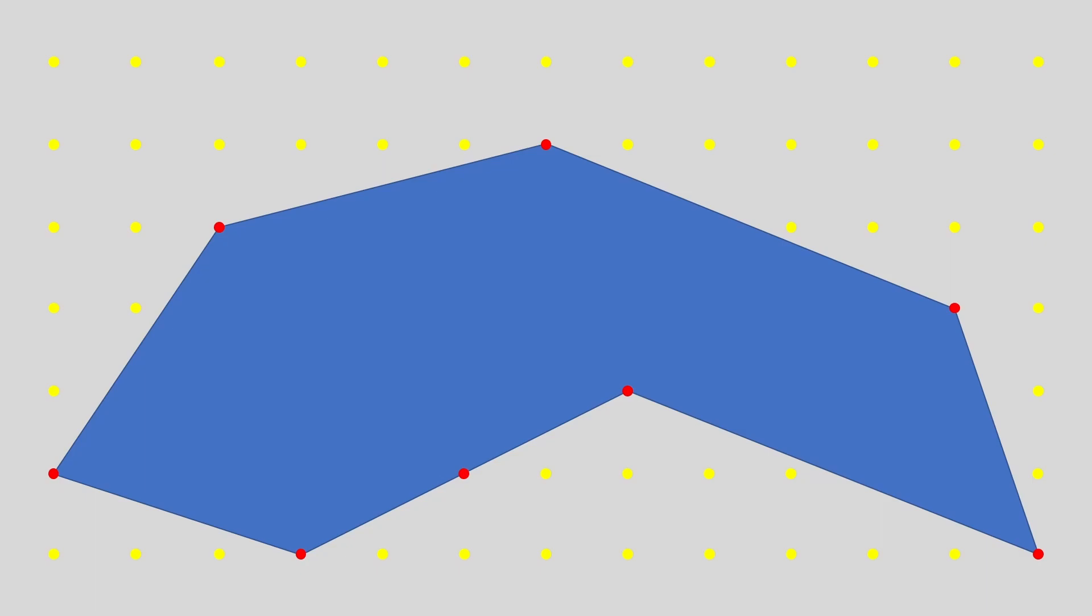Now let's count the interior points. It looks like we've got 6 in the top row, 9 in the next row, 10 in the next row, and 6 in the bottom row. That gives us a total of 31. Let's plug these numbers into our formula.